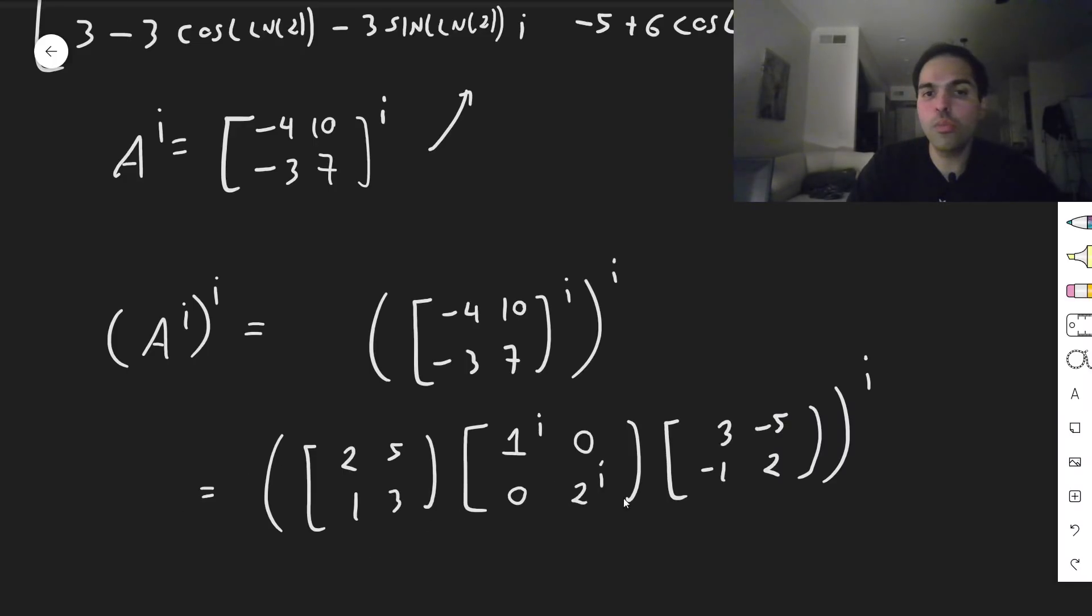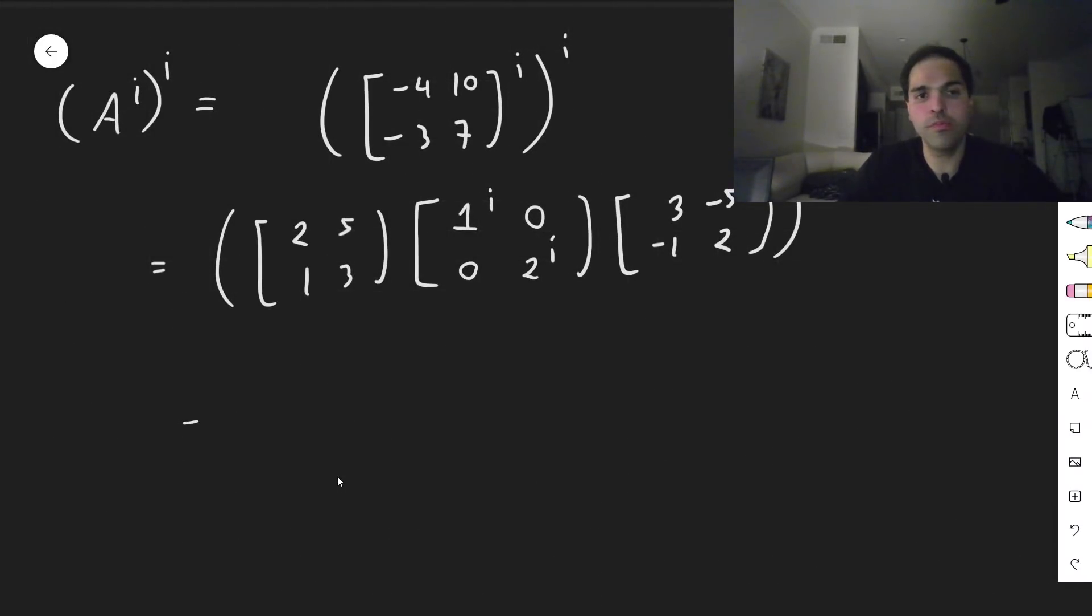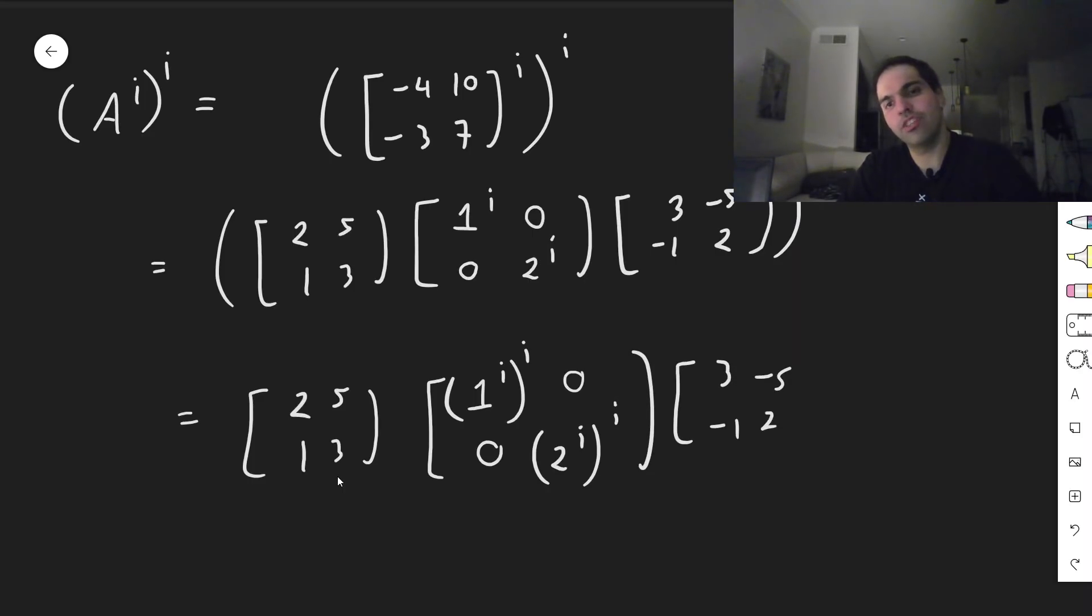So all you do, you put another i on the diagonal terms. So this becomes 2, 5, 1, 3, 1 to the i, to the i, so i, i, captain, 2 to the i, to the i, and then 3, minus 5, minus 1, 2.